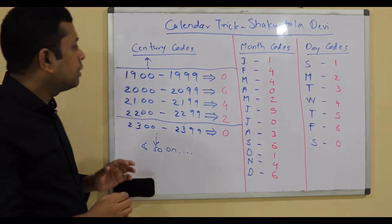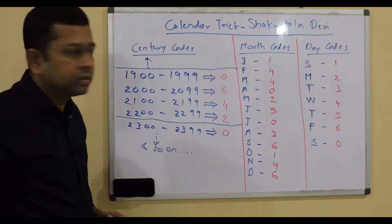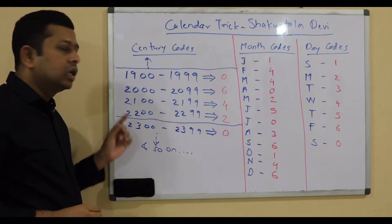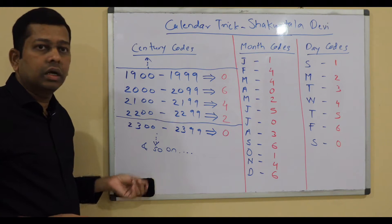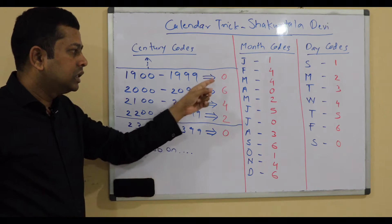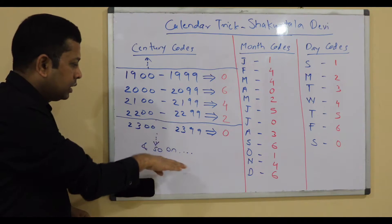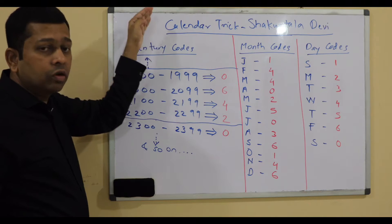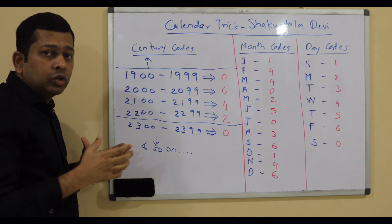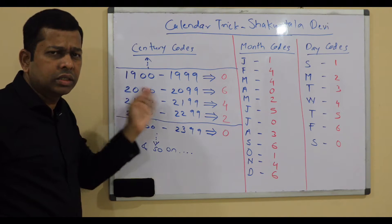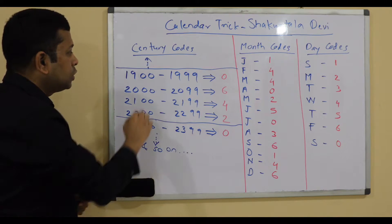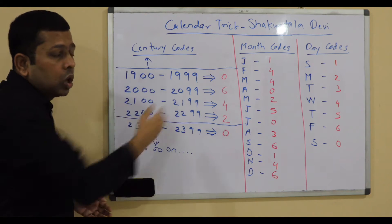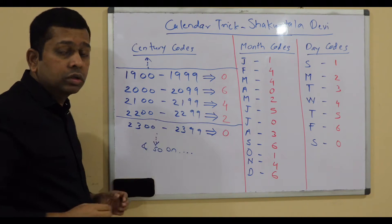Then we come to century codes. 19th century (1900–1999), 2000–2099, 2100–2199, and 2200–2299 have codes 0, 6, 4, 2 — and these codes repeat after that. The pattern 0, 6, 4, 2 is what you need to remember. Most people will ask you dates from the 1900s or 2000s, since their birthdays fall in those centuries.